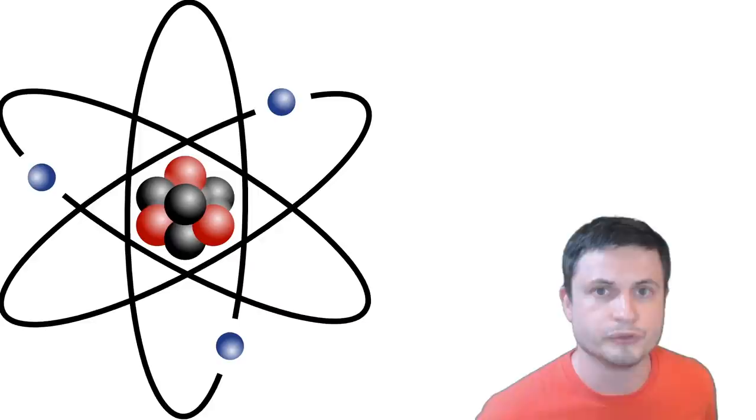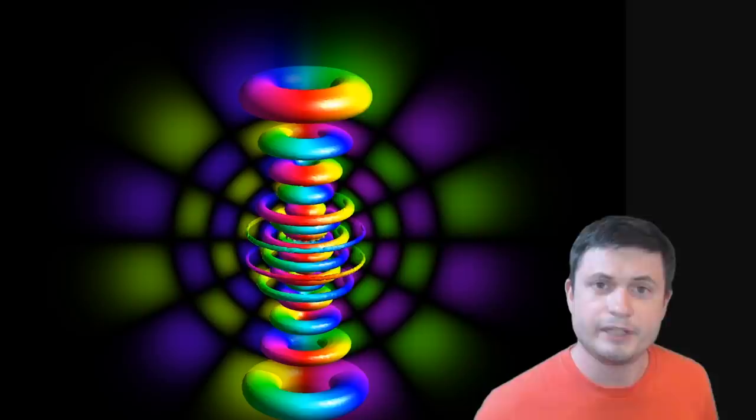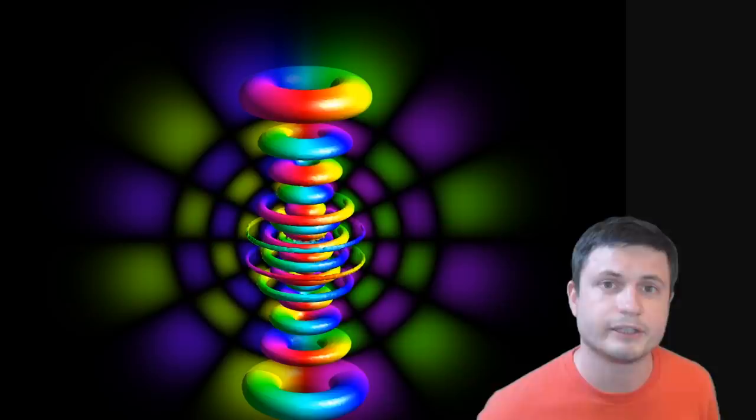But don't get confused, this is not the same as spaghettification near black holes. This is a completely different phenomenon, with very similar effects. Even the simplest atom in the universe, hydrogen, becomes elongated and turns into a very long spindle, about 200 times longer than it is in thickness. So everything changes, everything becomes very unusual and things start acting much different from how they act here on Earth.